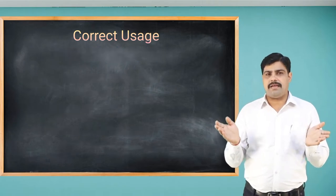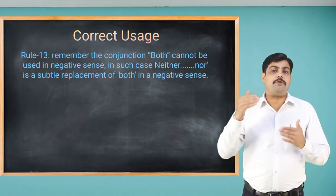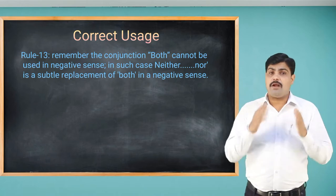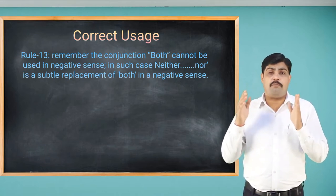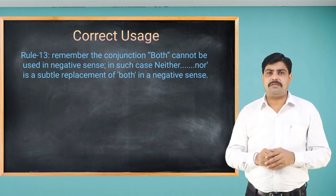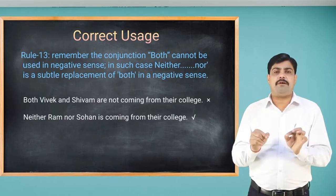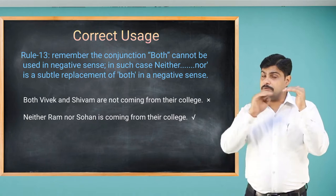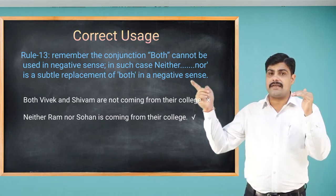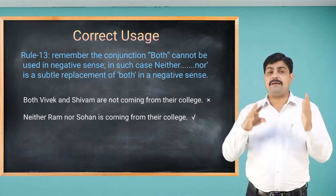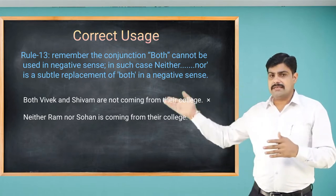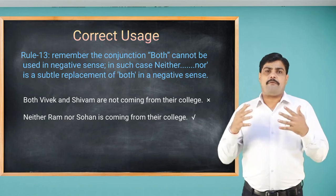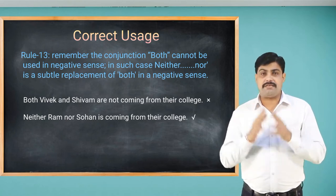Rule number 13: the conjunction 'both' cannot be used in a negative sense. 'Neither...nor' is the replacement of 'both' in a negative sentence. For example, 'Both Vivek and Shivam are not coming from their college' is wrong. We must use 'neither...nor' instead. The correct sentence is: 'Neither Ram nor Sohan is coming from their college.'